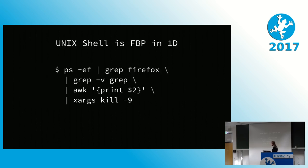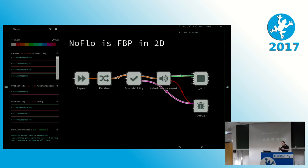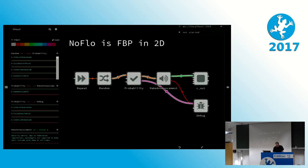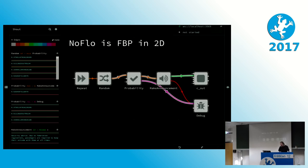Those textual Unix pipelines are usually one-dimensional. What we do with NoFlow is try to bring that to the second dimension. That's what we're doing here.